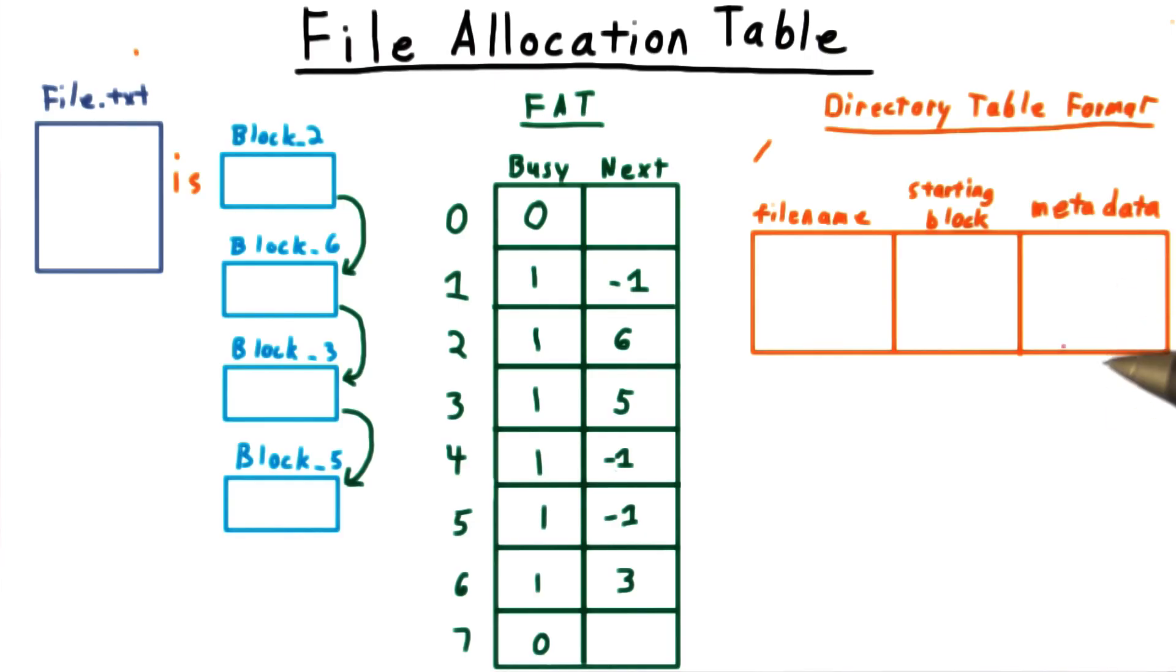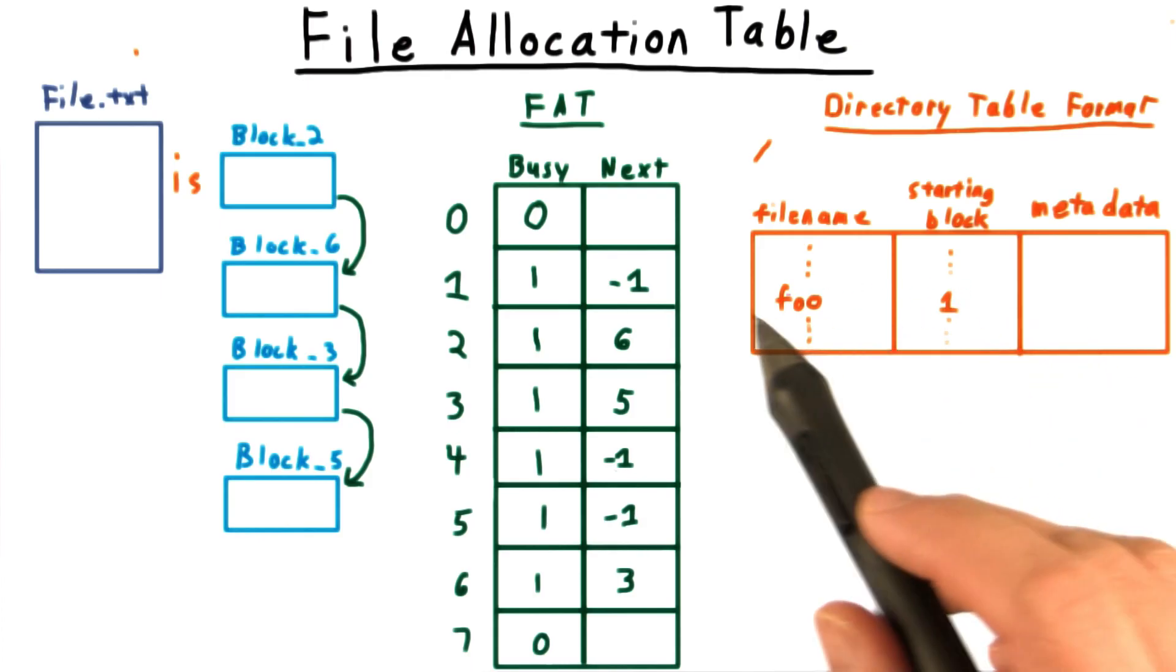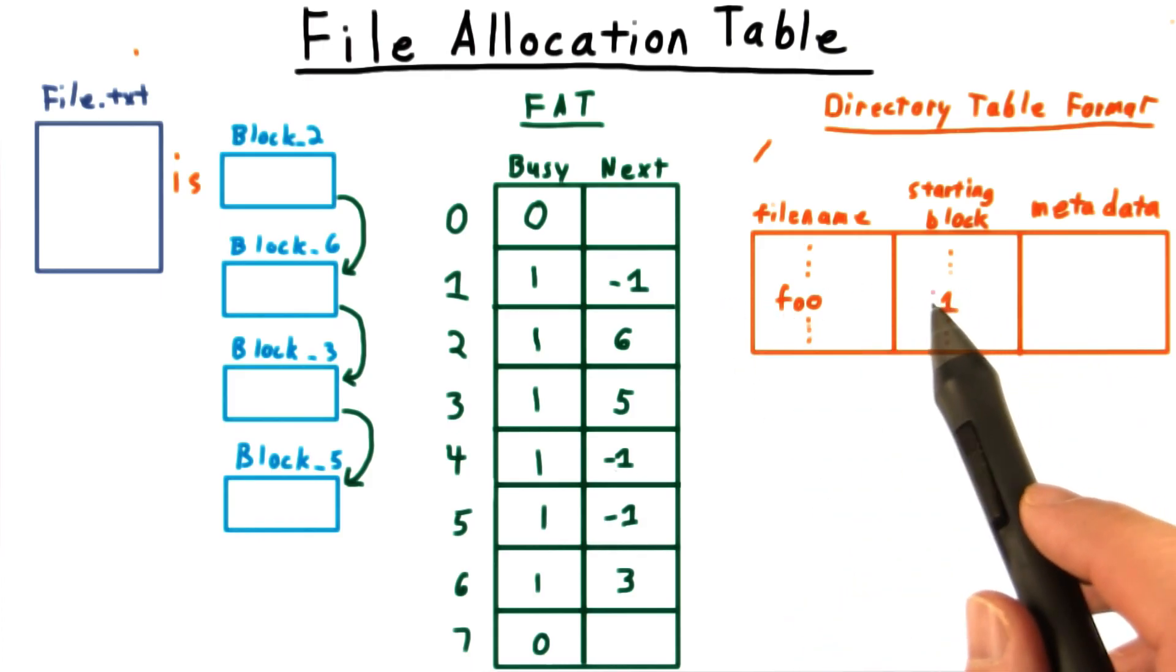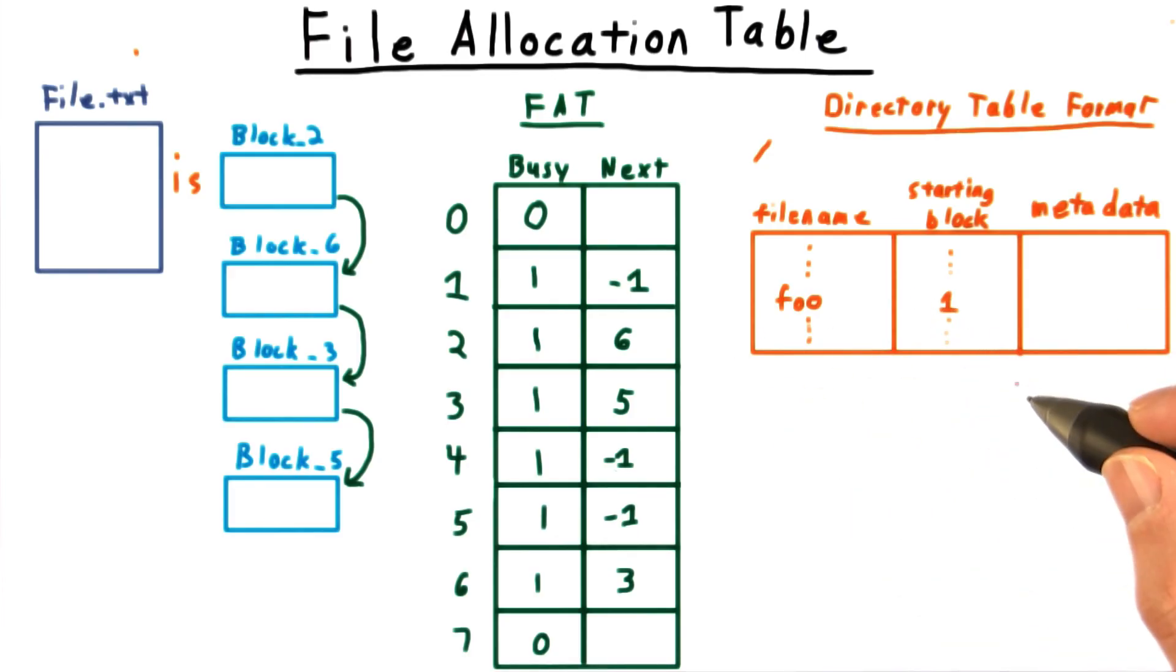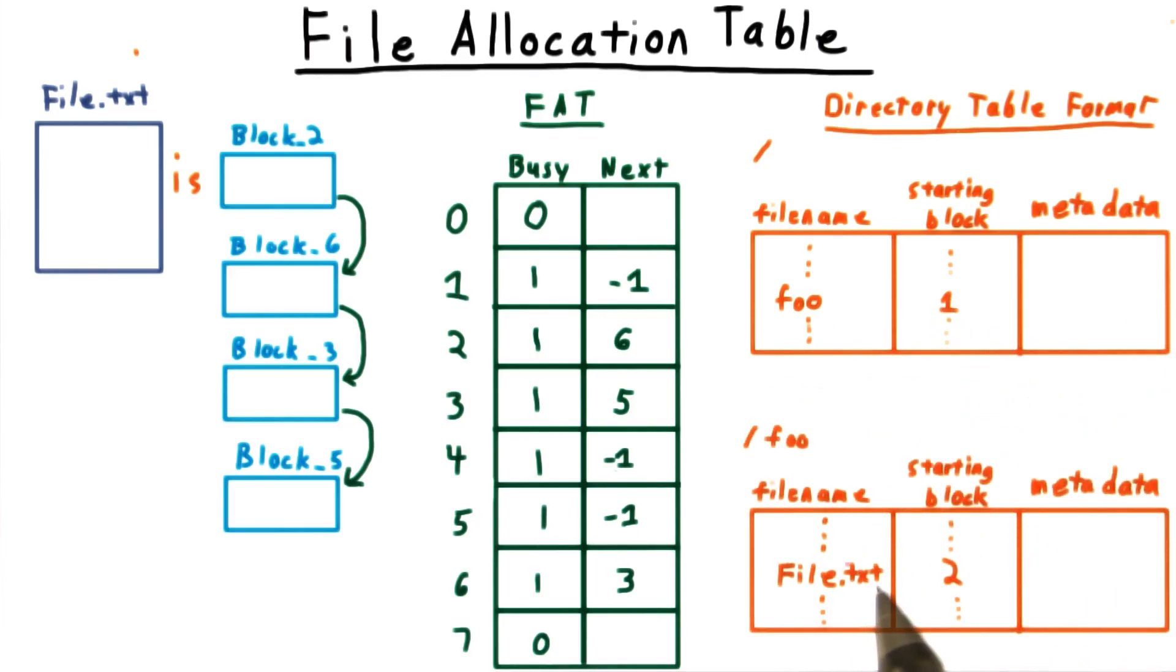The root file directory has a fixed address on the disk, so we always know how to get started. Let's say that I wanted the content of a file /foo/file.txt. I would first consult this root directory table. It would tell me that there is indeed a directory named foo and give me the starting block of that file. I would then access that file on the disk, and since it's a directory, I would look through there for file.txt, and it would tell me that the starting block is 2.